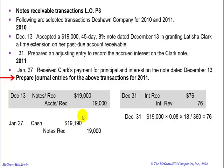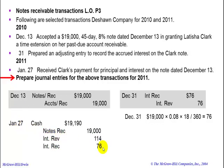We're going to credit notes receivable for the principal amount of $19,000. We're going to credit interest revenue for $114, representing the revenue from January 1st until January 27th. We're also going to credit interest receivable for $76 — the interest we had set up and earned back on December 31st. We're collecting it now in this $19,190 total, and all three of these pieces should equal $19,190.